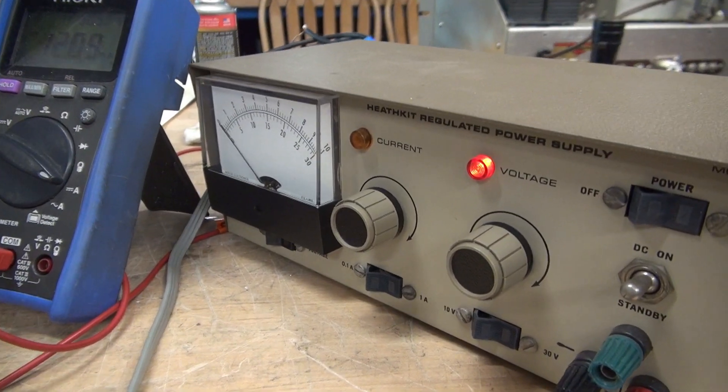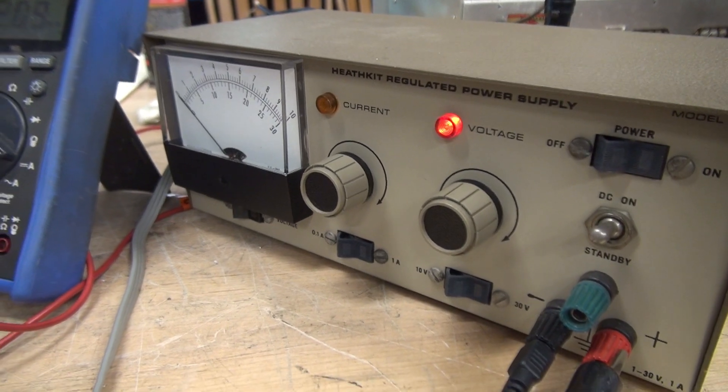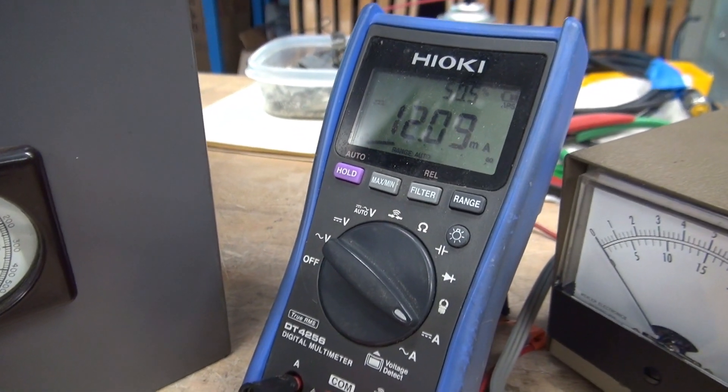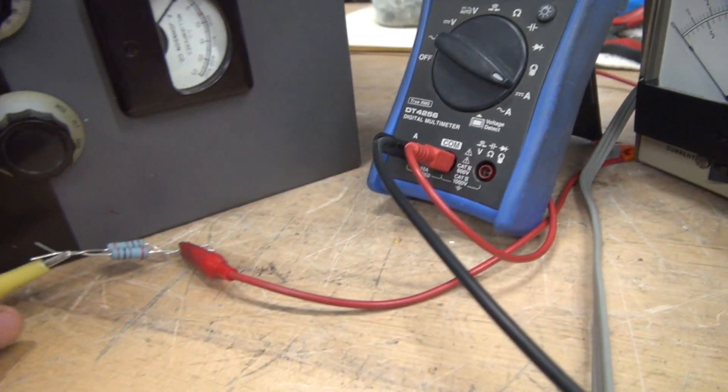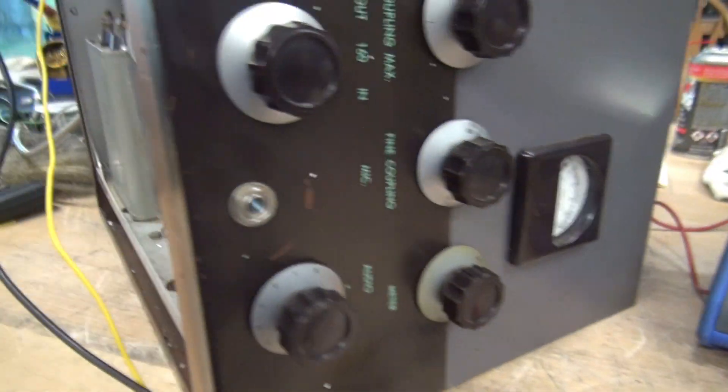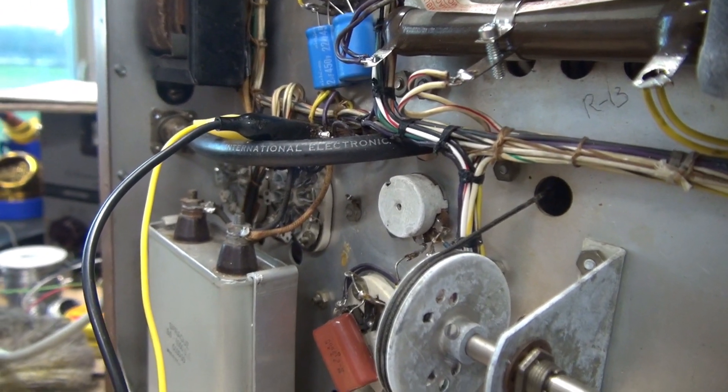Here's the test setup. We have a Heathkit power supply, zero to 30 volts. We have a multimeter set on the milliamp DC range. There is 50 ohms in series with the power that's being applied to the current shunt.